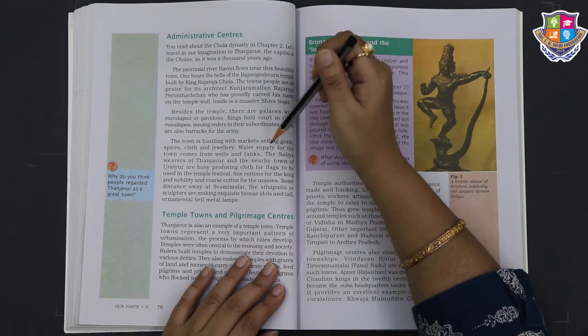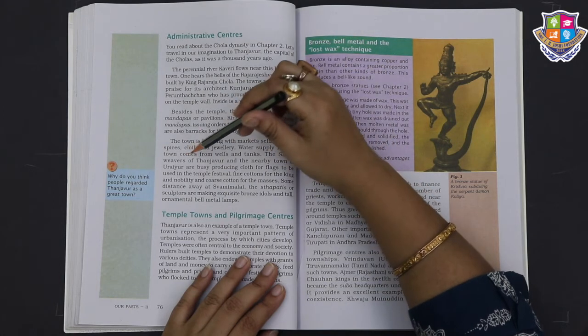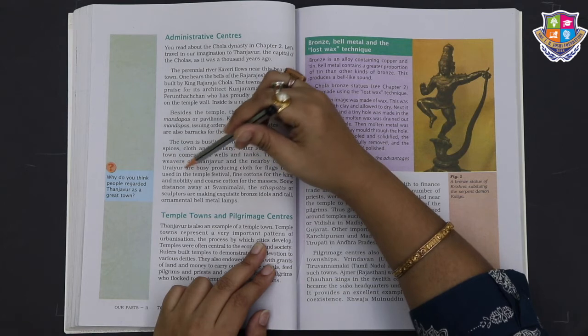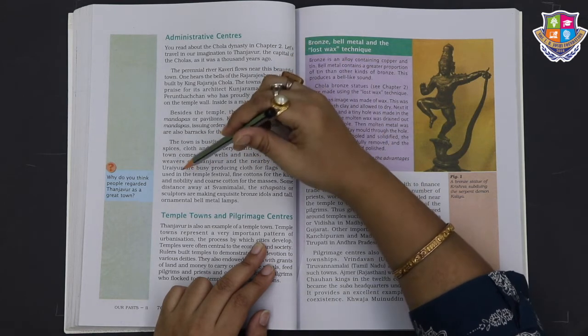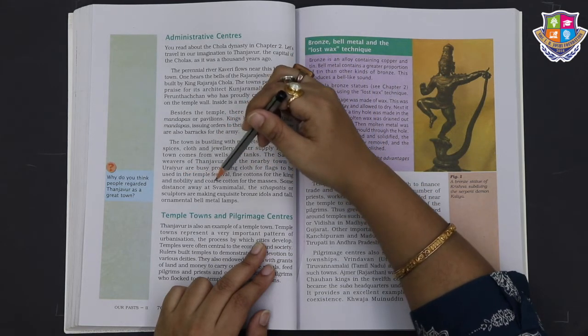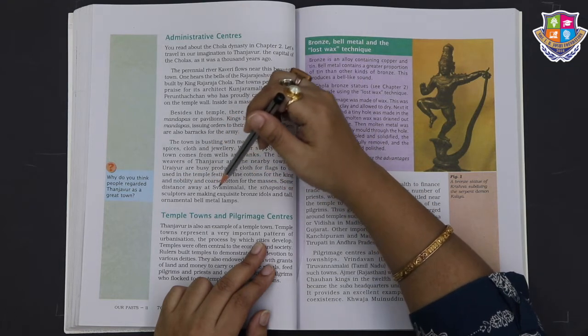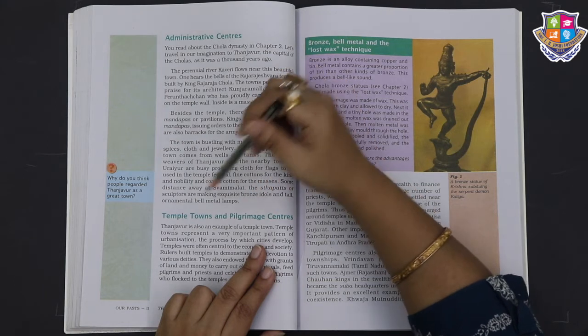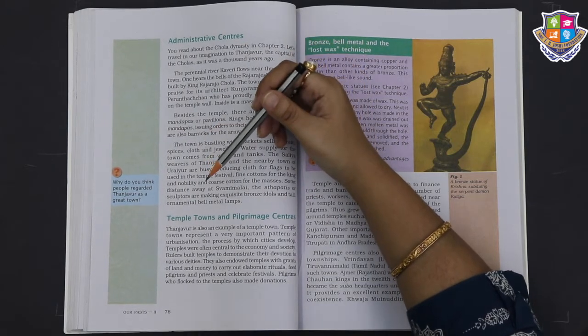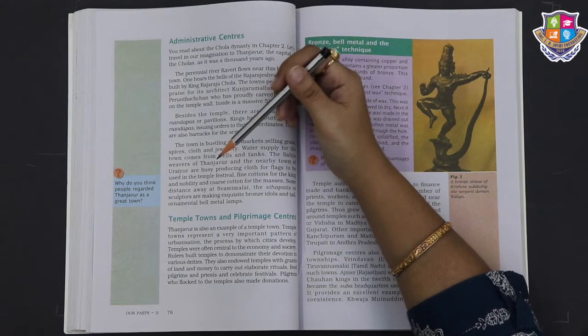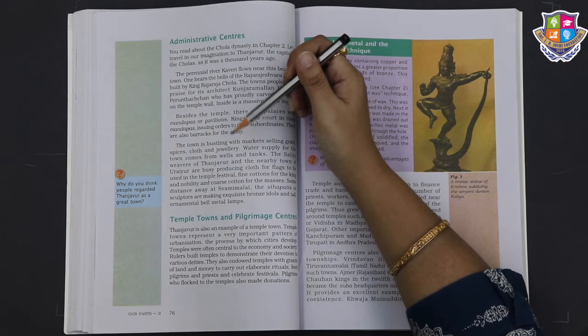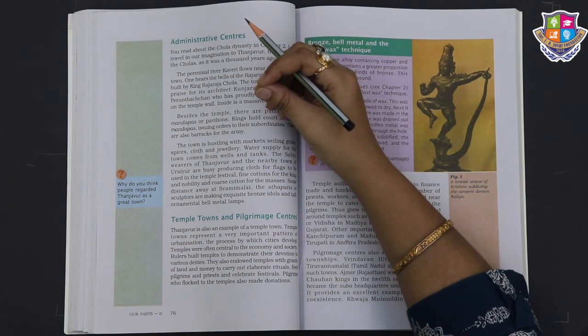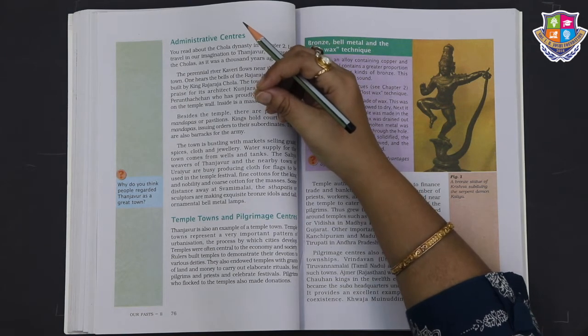The town is bursting with markets selling grains, spices, clothes and jewelry. Water supply for the town comes from wells and tanks. Temple towns represent a very important pattern of urbanization, the process by which cities develop. Rulers built temples to demonstrate their devotion to various deities - the god or goddess whom we worship.